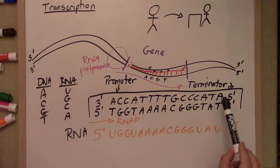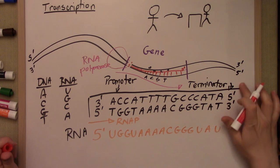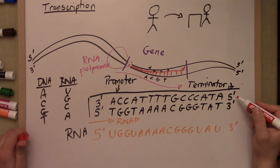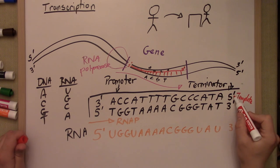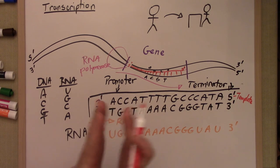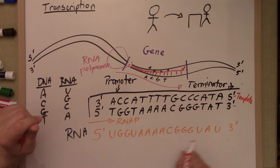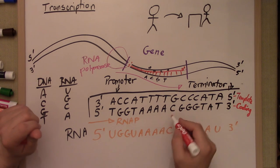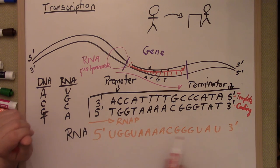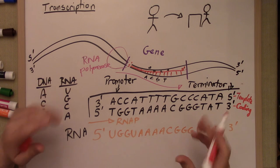The strand we use to find the complementary information — the top strand here — is called the template strand, because it physically is used as a template; these bases actually come in contact with the new mRNA being made. The bottom strand is often more useful for scientists because it has the same code as the RNA we're going to make, and so it's called the coding strand. You can do it either way: take the template strand and put complementary bases in, or take the coding strand and just replace the T's with U's — you'll get the same code every time.